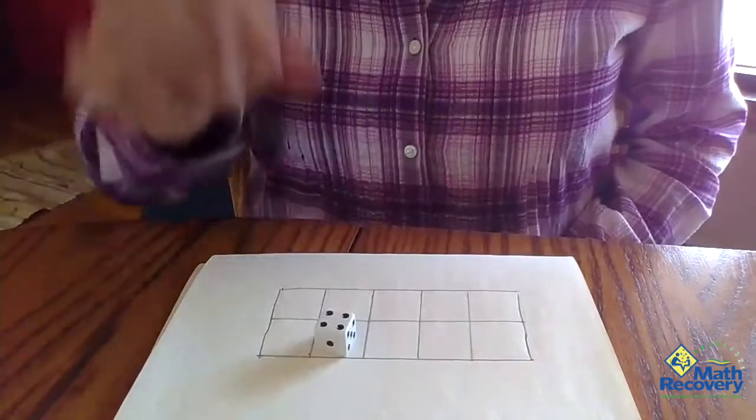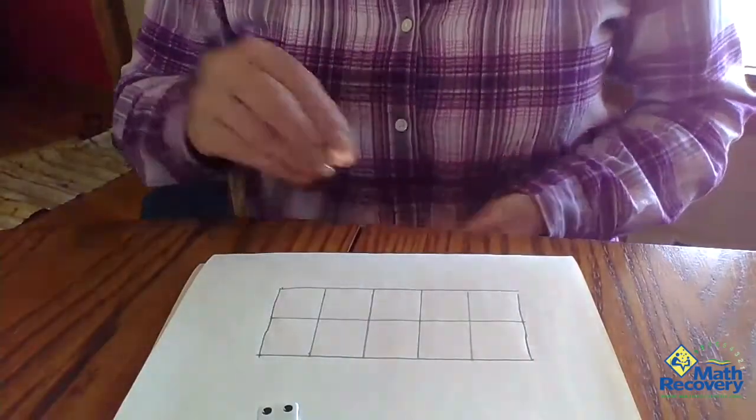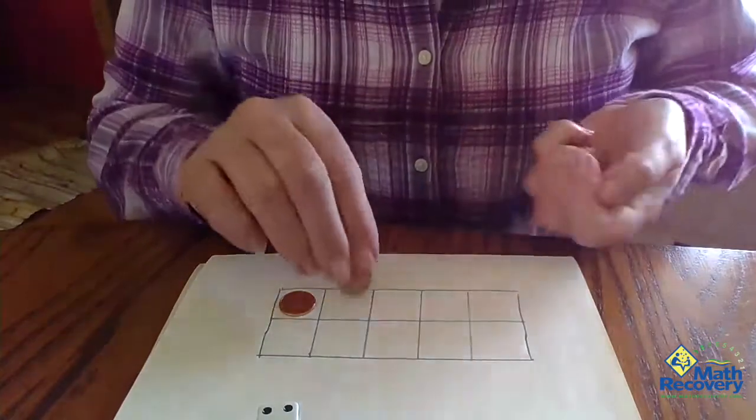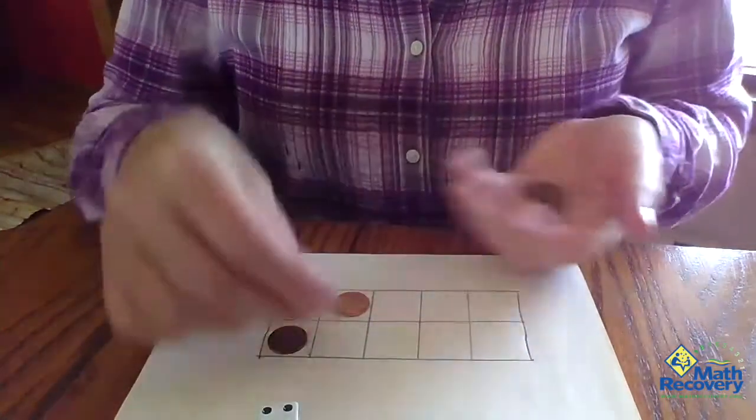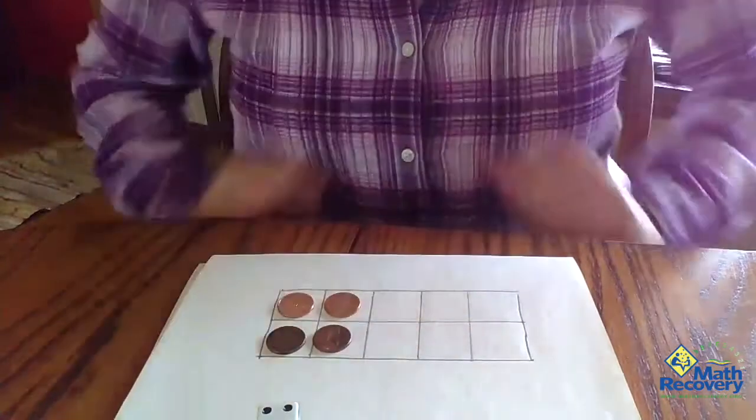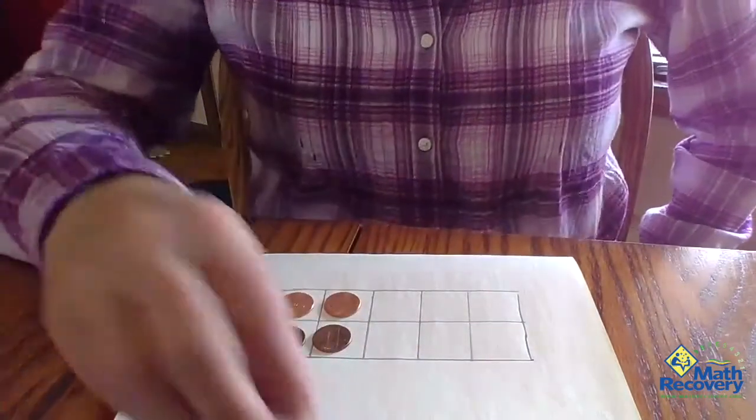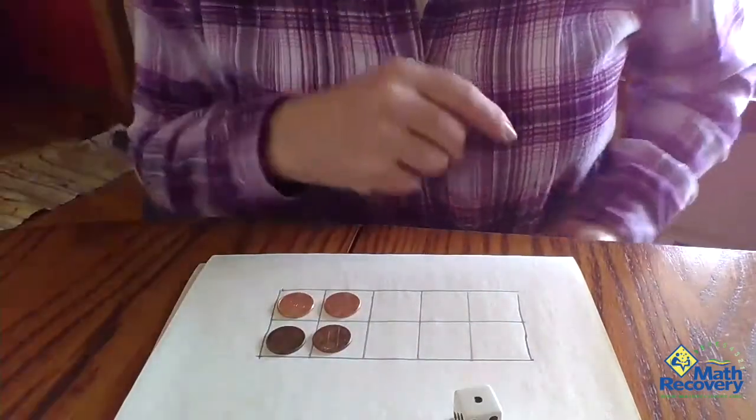You could, if you wanted to, do it pairwise. So this way would be putting in four like this so it looks more like a doubles fact.